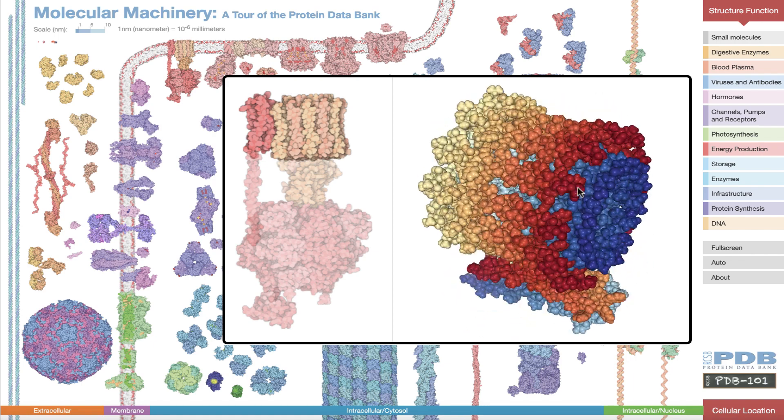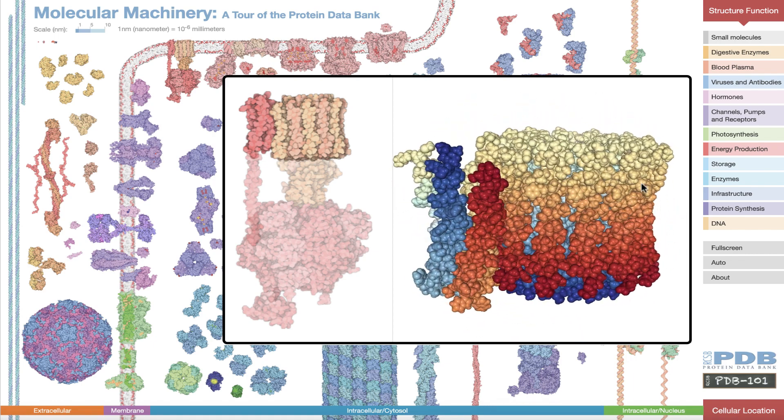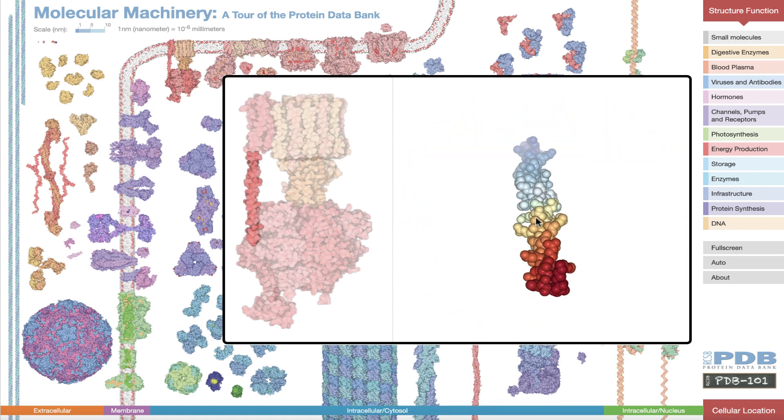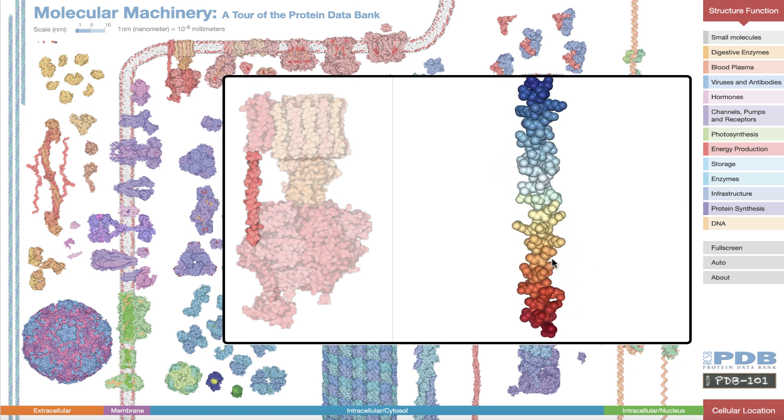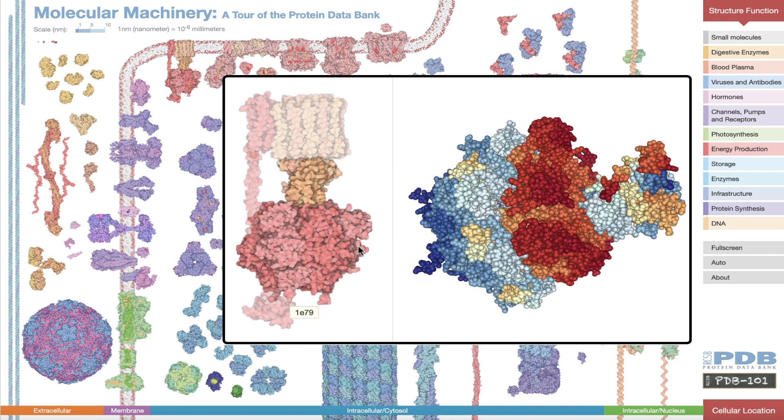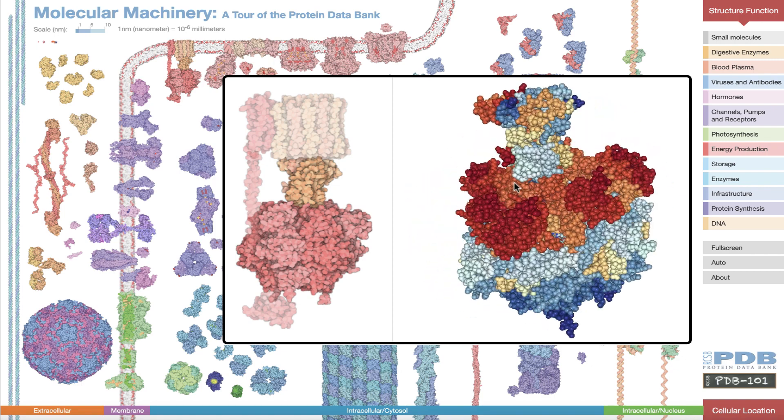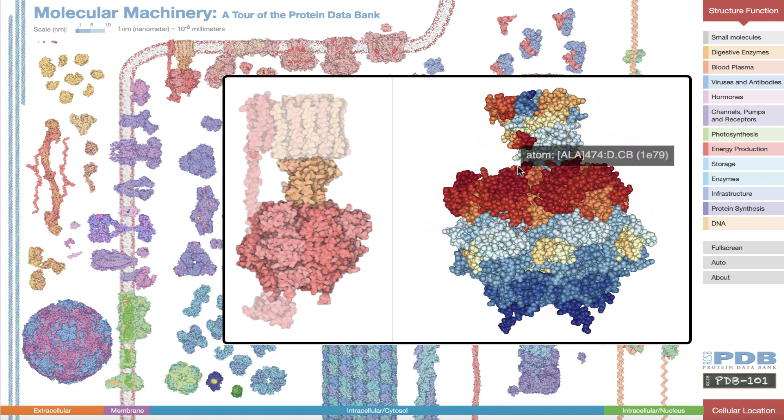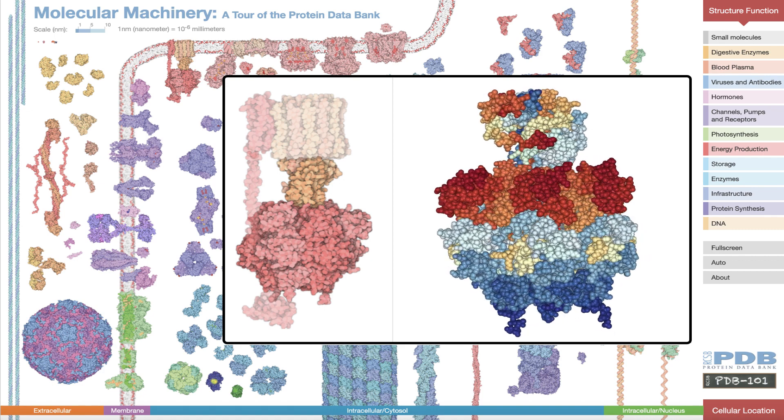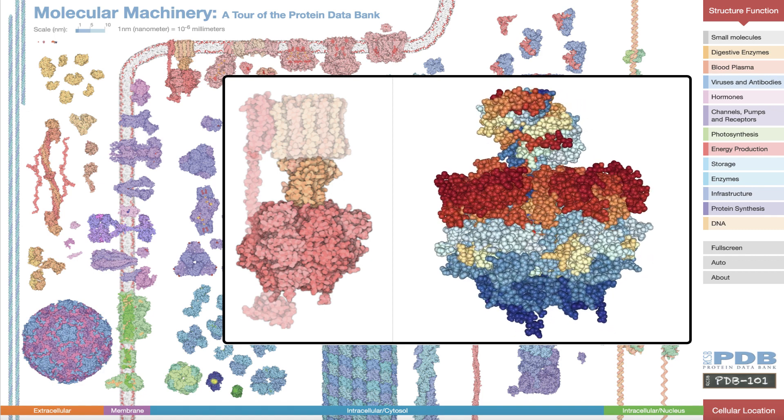To get a sense of how all these parts may work together, the domains of specific proteins have been shown next to each other as they would appear in the context of a cell. However, it should be noted that the actual structure of the complete protein may be slightly different from these composite presentations.